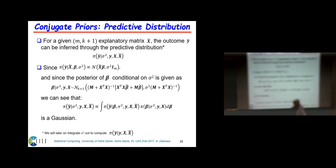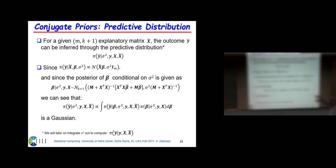To complete the Bayesian picture, after training the model we need to test it. Given new test inputs X-curly (a whole matrix of test points), we need to compute the probability of the test responses Y-curly. This is the predictive distribution.